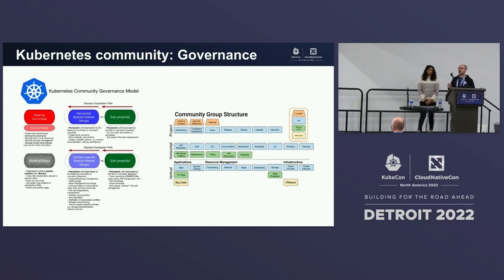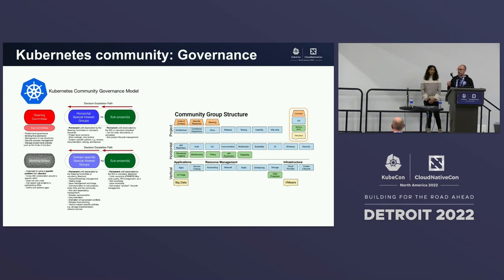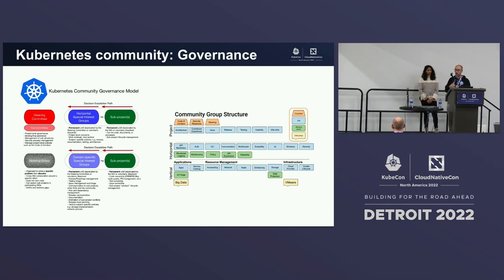For the people not used to Kubernetes, just to understand a bit better how the project works and how it is organized: the project governance on the developer side is based on Special Interest Groups. We can have groups that are horizontal, like API Machinery or Scalability, or groups that are vertical, like Network, Node, and Scheduler.